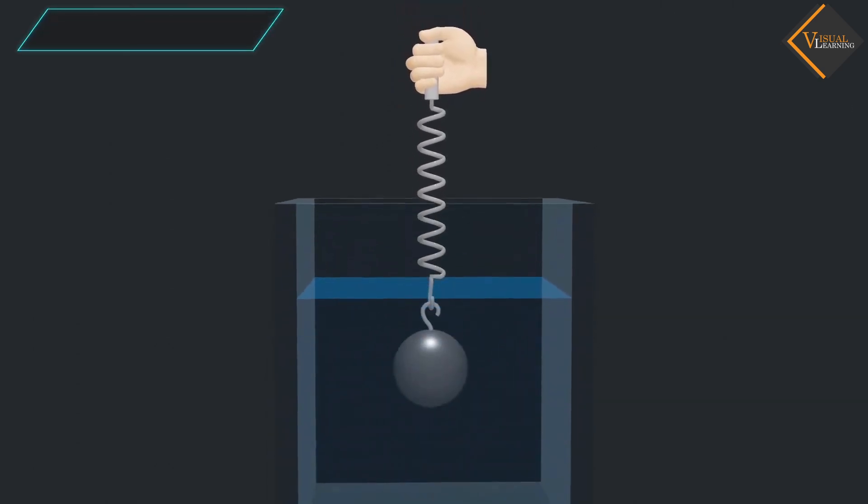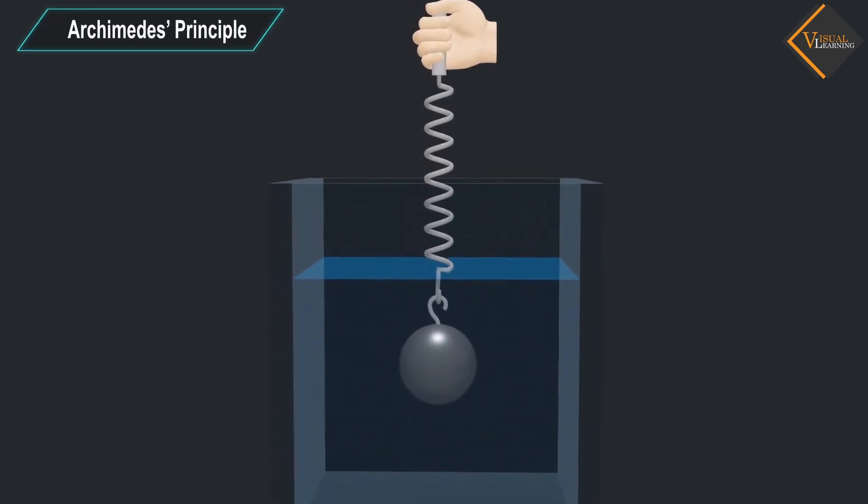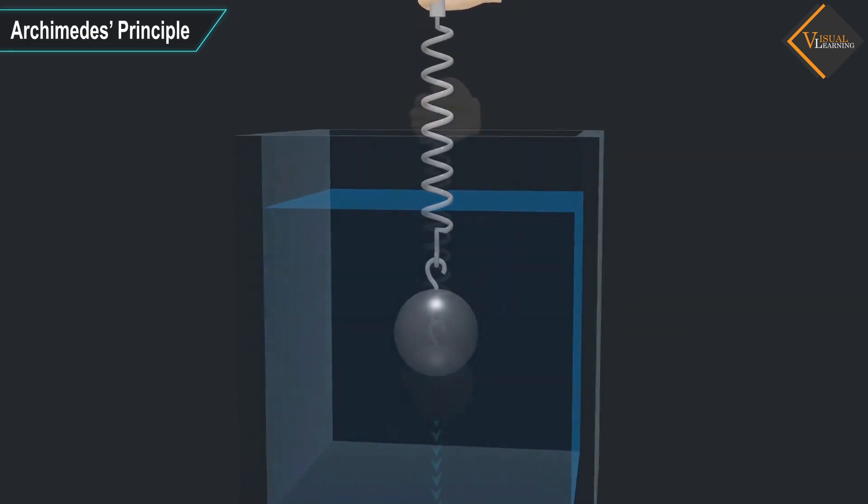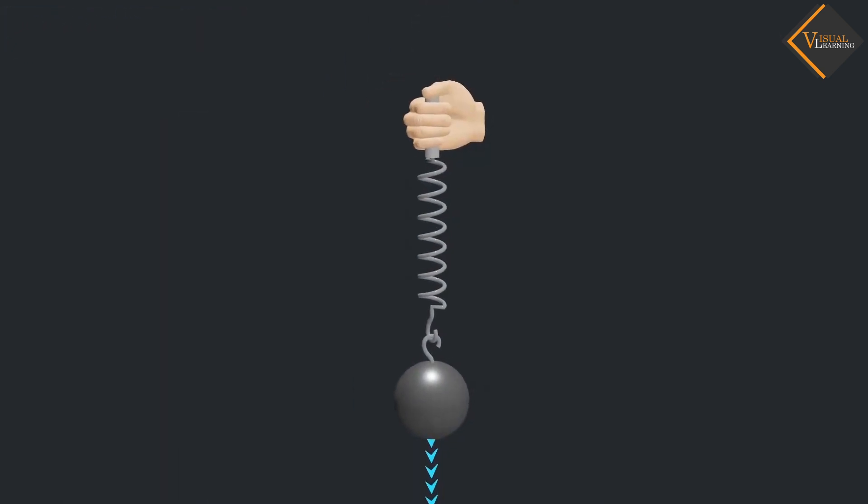In this video, we will understand Archimedes Principle. In the animation, we see that a spring is connected to an iron ball.